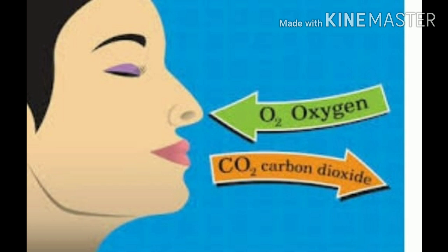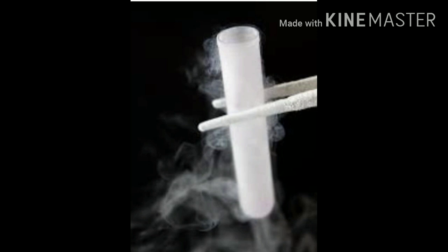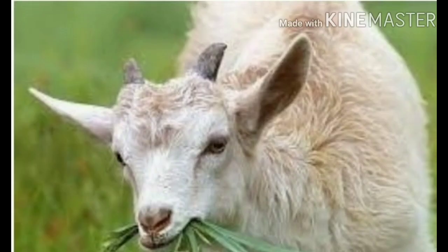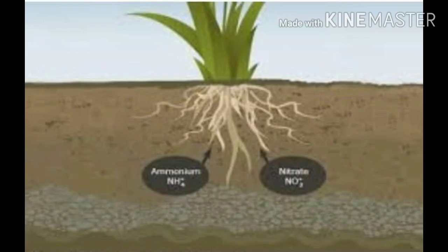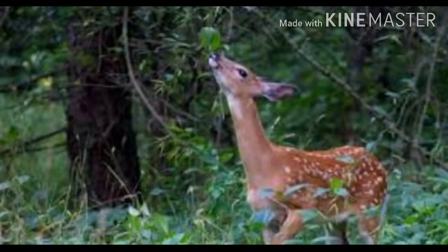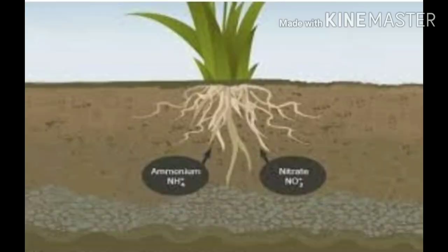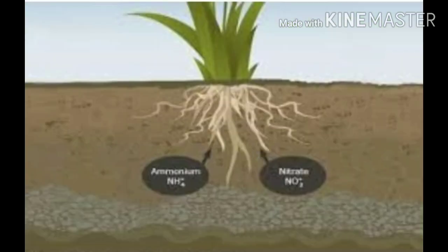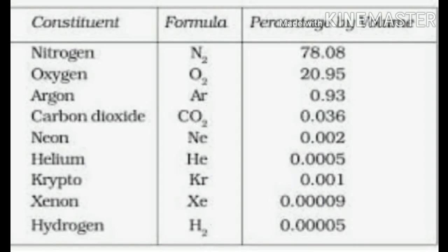Nitrogen is a colorless, inert gas and has no taste or smell. It is very important for all living things but they cannot use it directly from the atmosphere. Plants obtain it from the soil and animals obtain nitrogen by eating plants or other animals. Nitrogen helps in the growth of living organisms, especially plants, and is used in making chemical fertilizers. Oxygen and nitrogen together constitute about 99 percent of the volume of air.